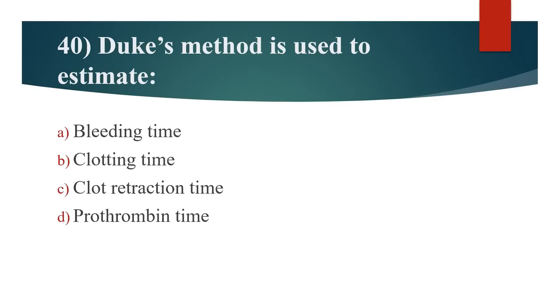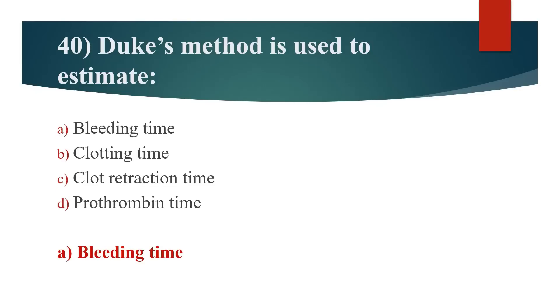40th question: Duke's method is used to estimate? Option A: Bleeding time. Option B: Clotting time. Option C: Clot retraction time. Option D: Prothrombin time. Answer is Option A: Bleeding time.